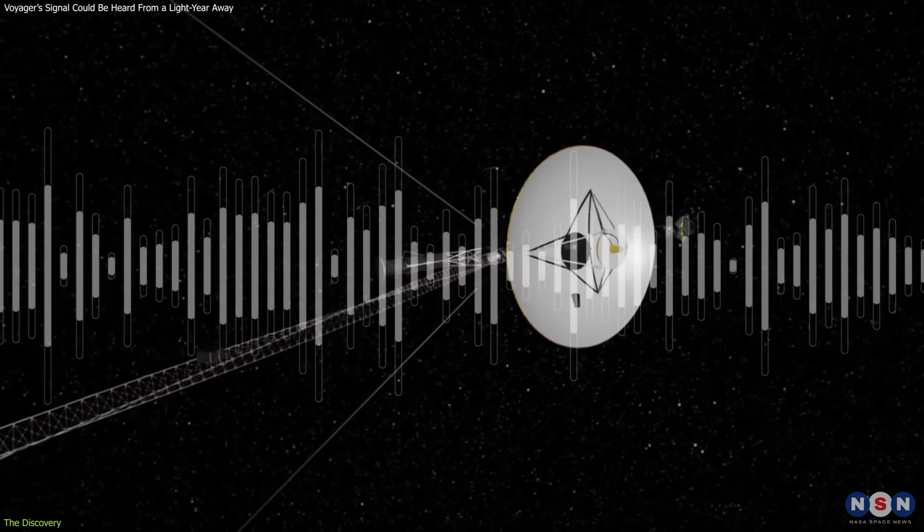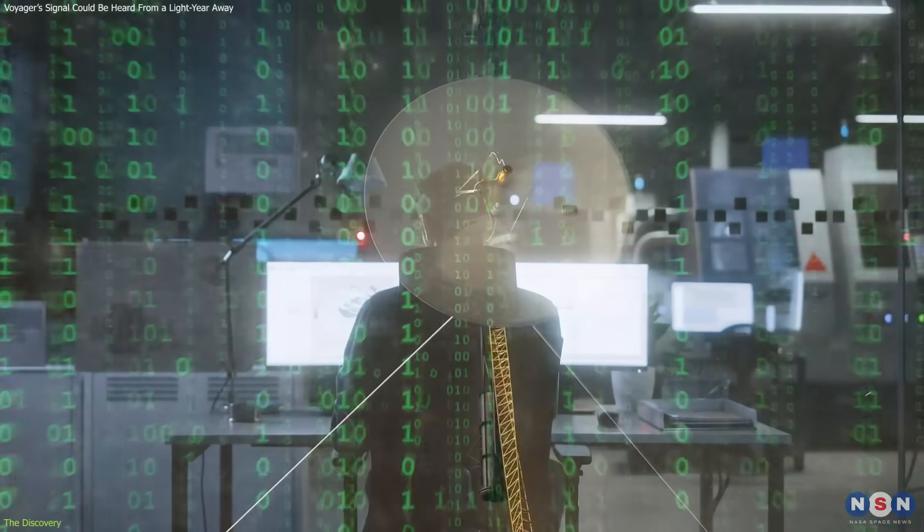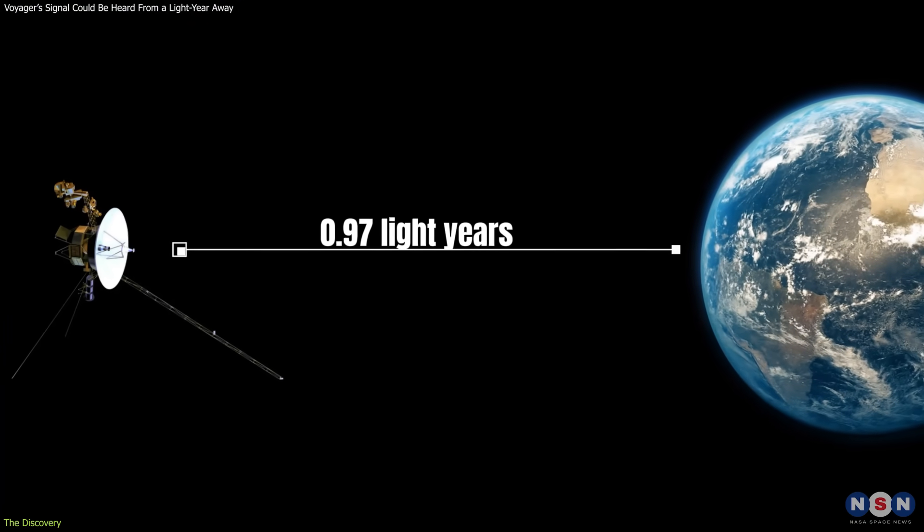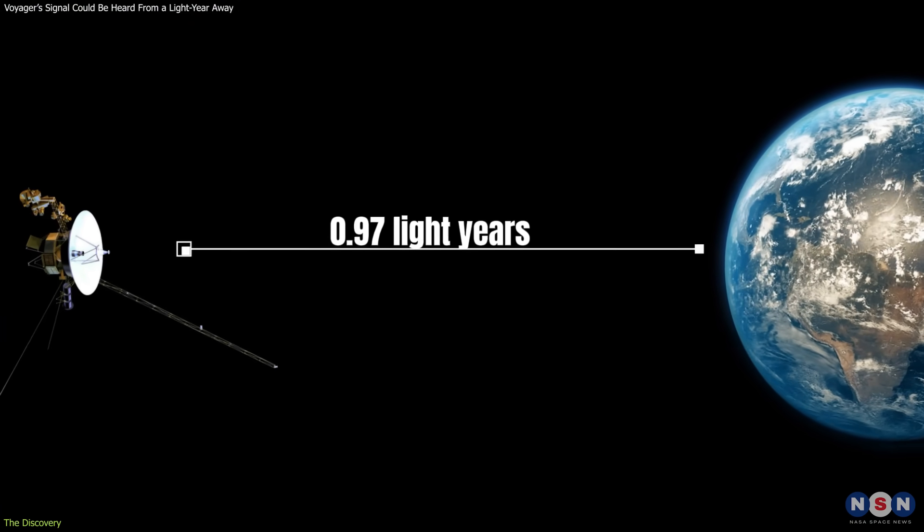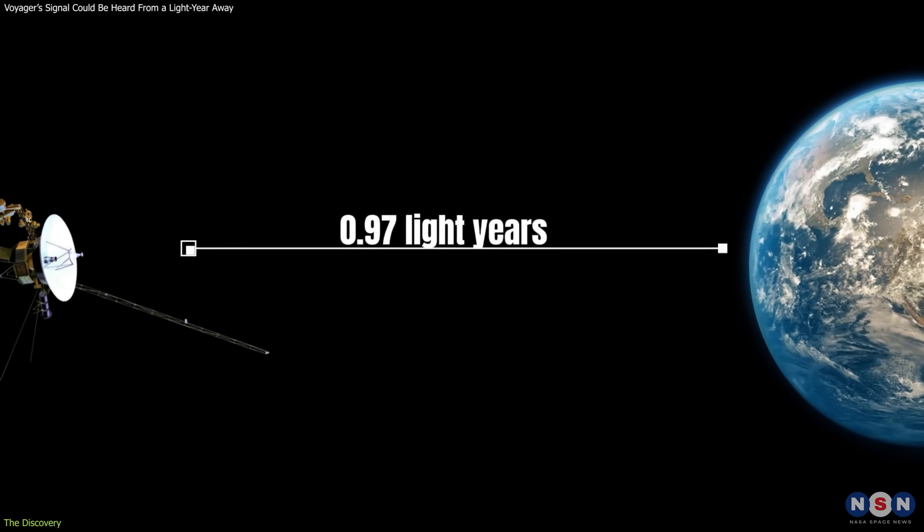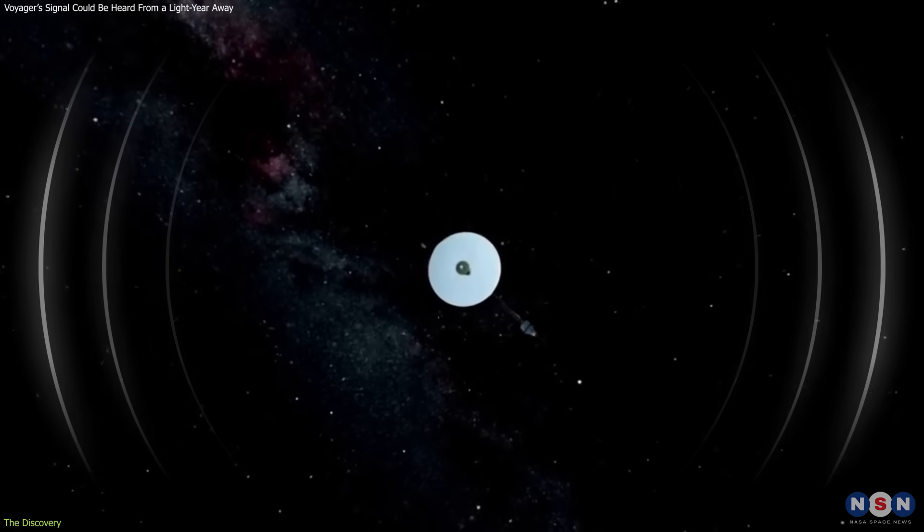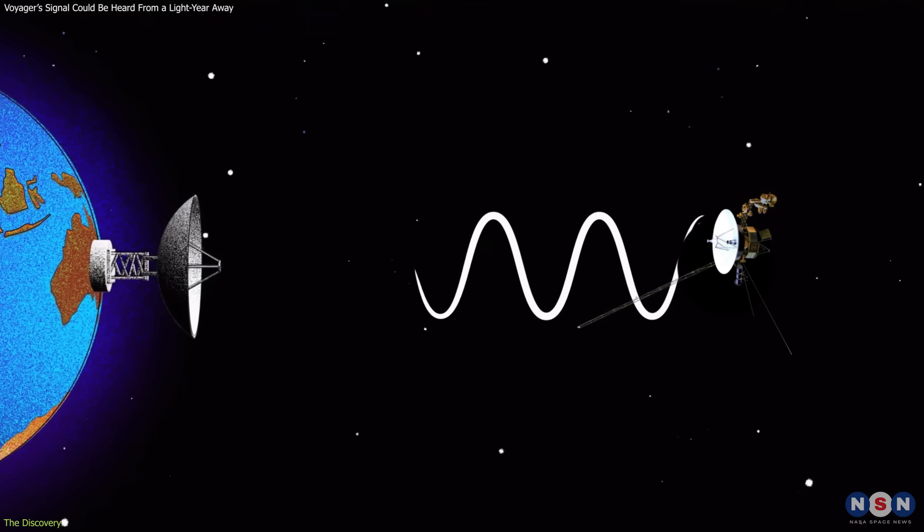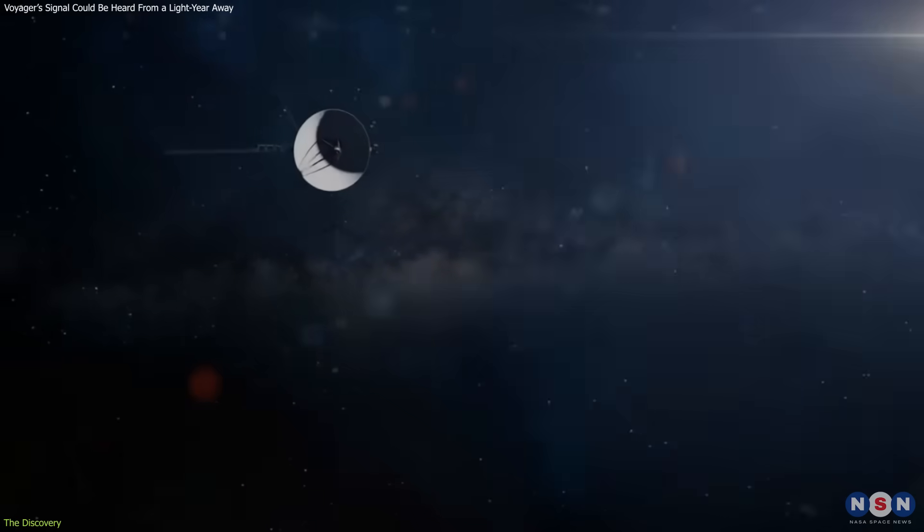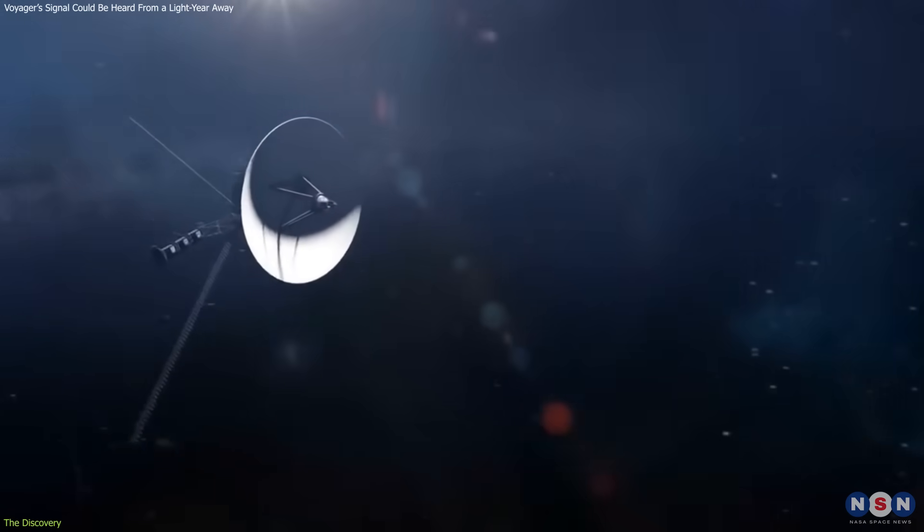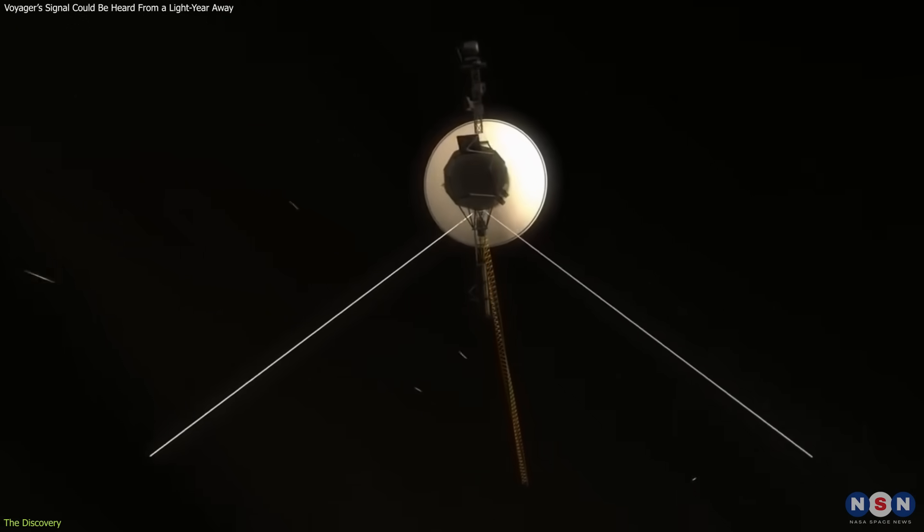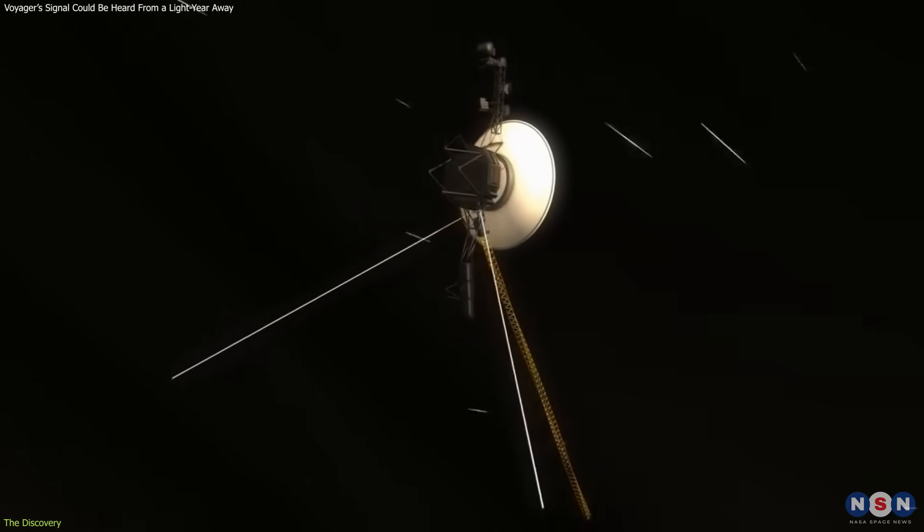Despite the transmitter's low power output, researchers calculated that we could continue detecting Voyager's signal out to approximately 0.97 light years, or about 354 light days. This is a theoretical limit assuming the spacecraft continues transmitting and our detection technology remains as it is today. Reaching that distance would take Voyager 1 about 17,000 more years at its current speed of roughly 61,500 kilometers per hour.